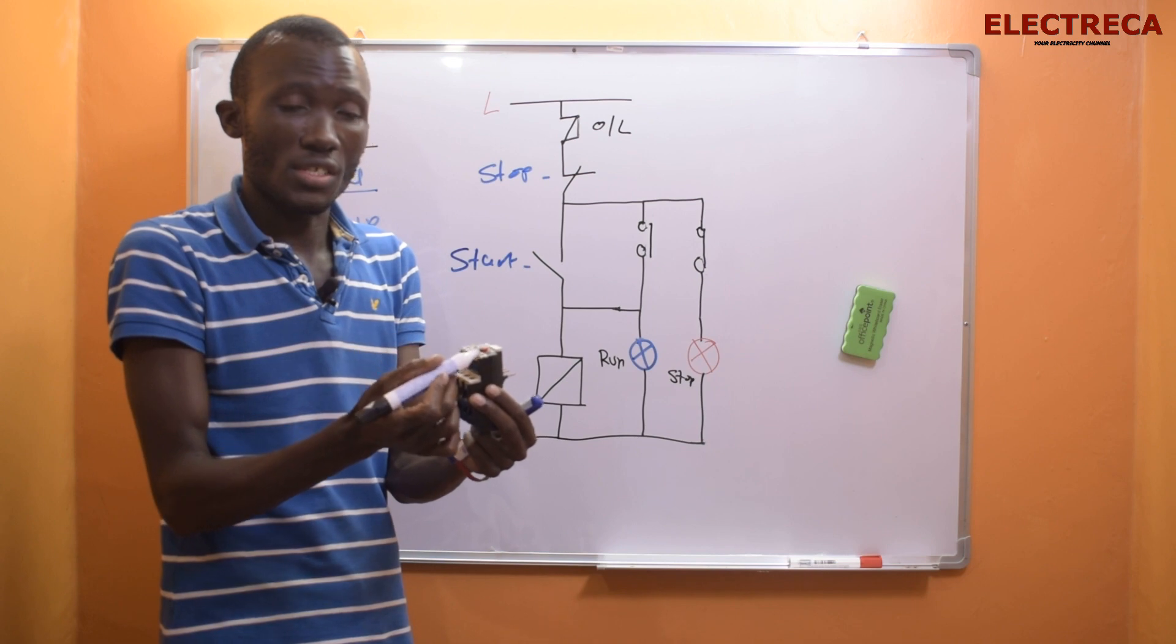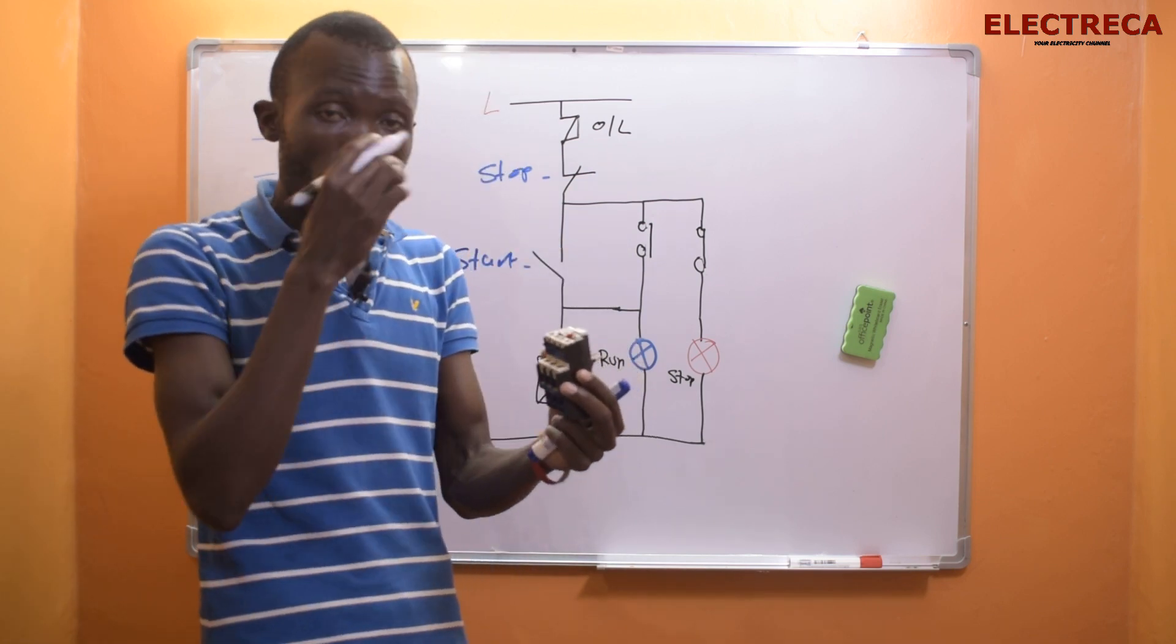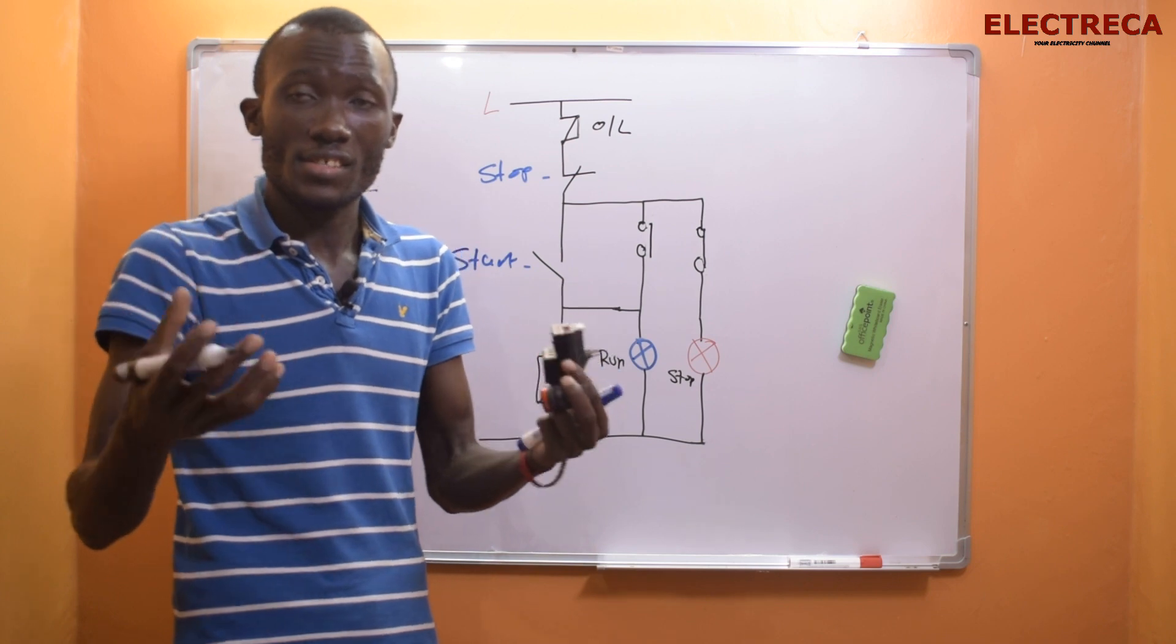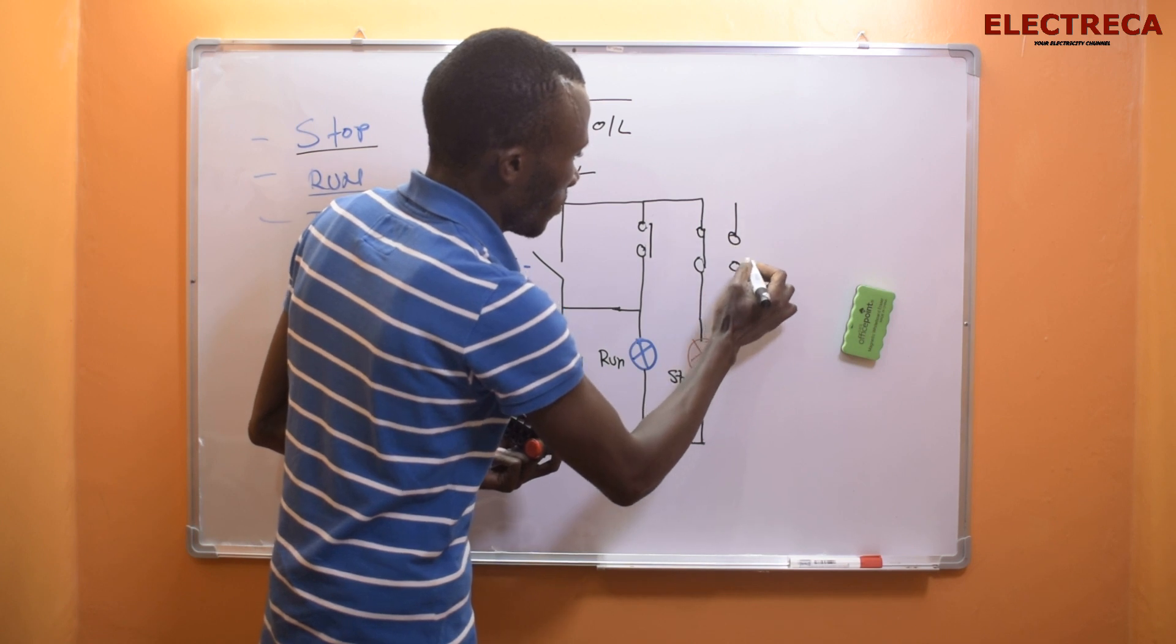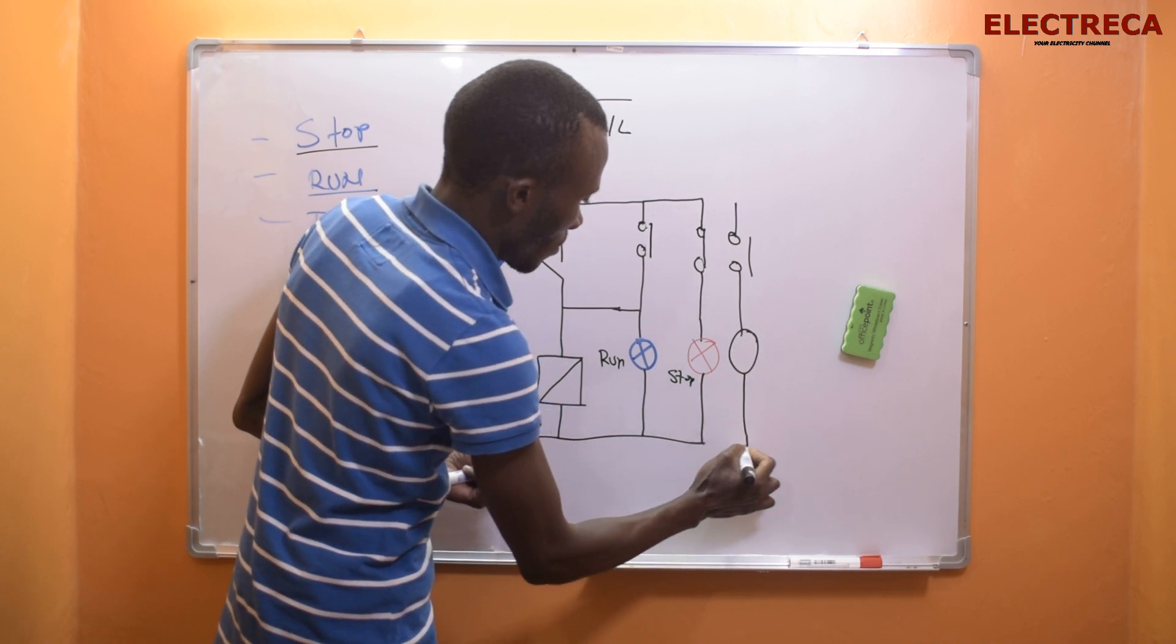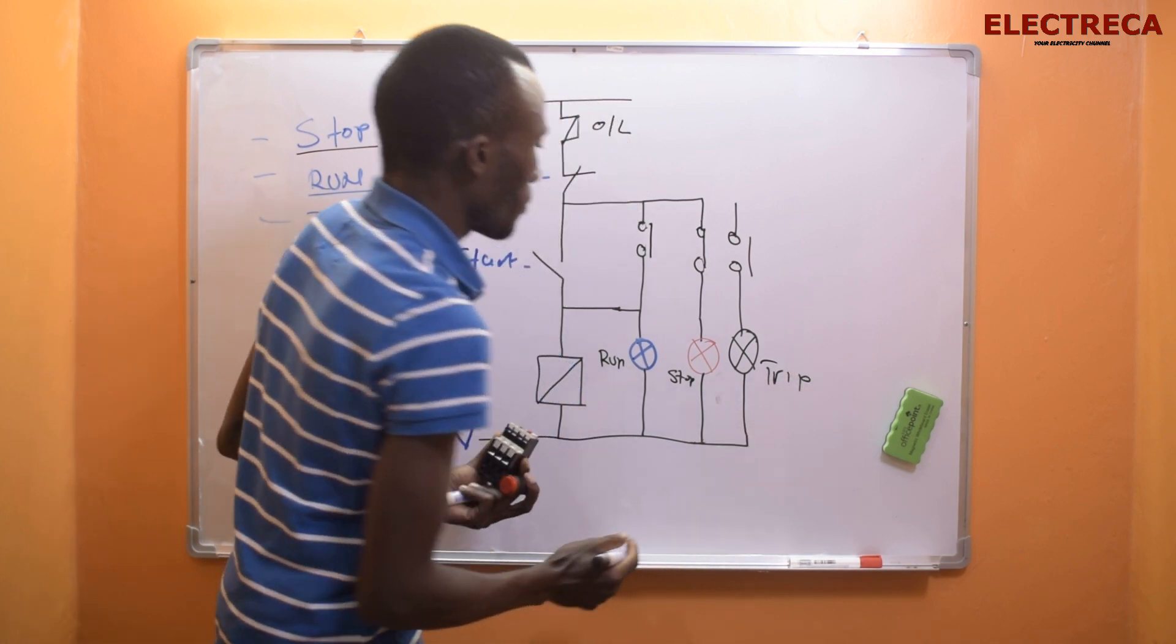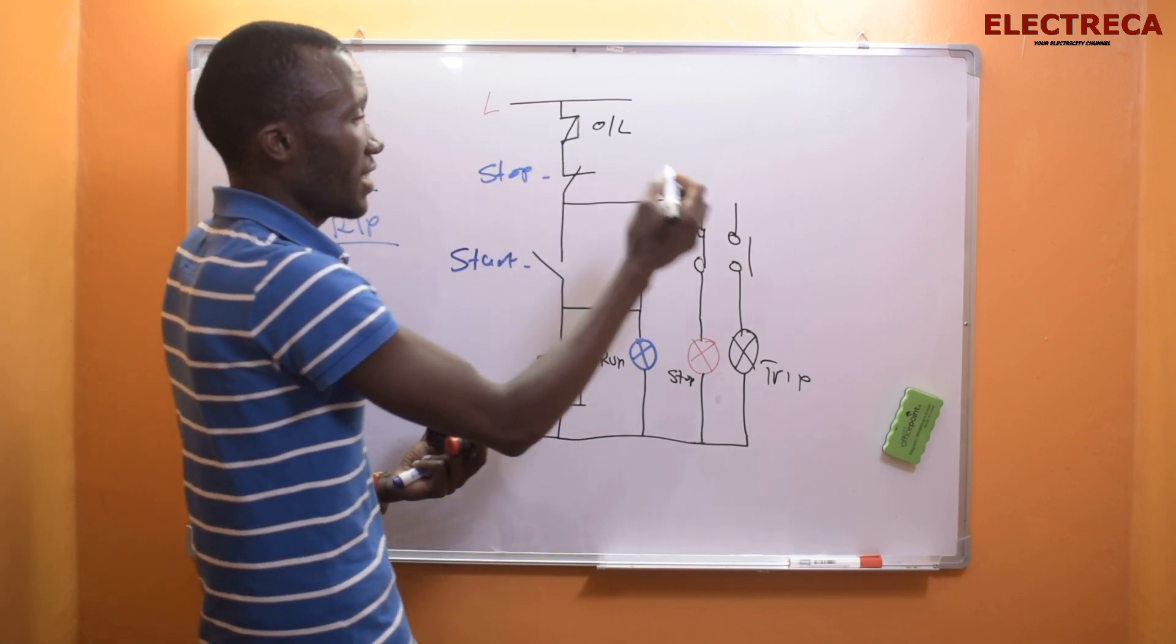The normally closed is where we connect our circuit, so through normally closed then to our stop. That means before the stop we have to go through the overload which is the normally closed contact, the 95-96. The other normally open is where we connect our indicator light which will show us that the circuit has tripped. We're able to add here, and this will be trip.